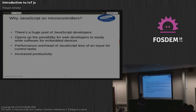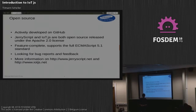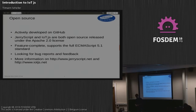All of this is open source. Both the IOT.js and JerryScript projects have been released last year and are actively being developed on GitHub. We are feature complete — we implement the full ECMAScript 5.1 standard and pass the entire Test262 conformance test suite. Right now we are trying to build up a community around it, get people to use it, report bugs, and give us feedback. For more information about both projects, please have a look at jerryscript.net or iotjs.net.